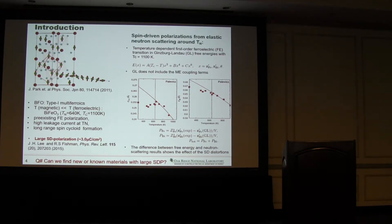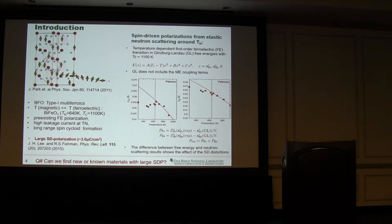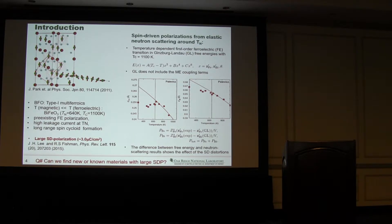What is done is you have distortion using neutron data, and then you are fitting higher temperature data with a paramagnetic value that doesn't have magnetic-electric coupling. So the difference will give you the spin-driven distortion. Using that distortion, you can get the spin-driven polarization, and the experiment matches with the theoretical prediction. From this, we were motivated to study other transition metal oxides. So instead of iron, we are trying to replace with cobalt, chromium, nickel, manganese, and trying to see which has the higher spin-driven polarization.